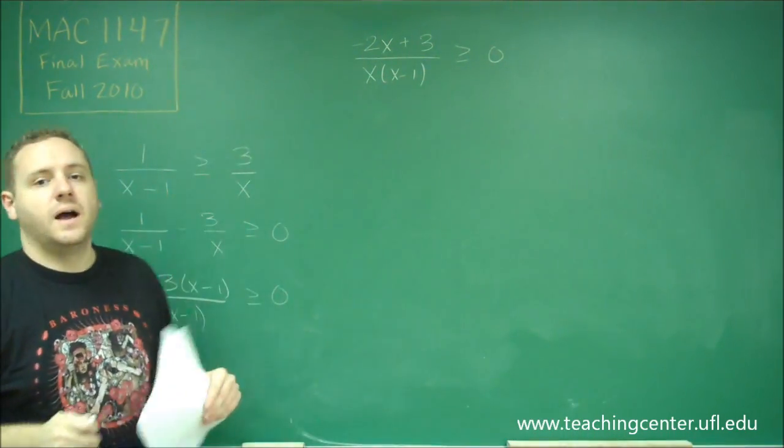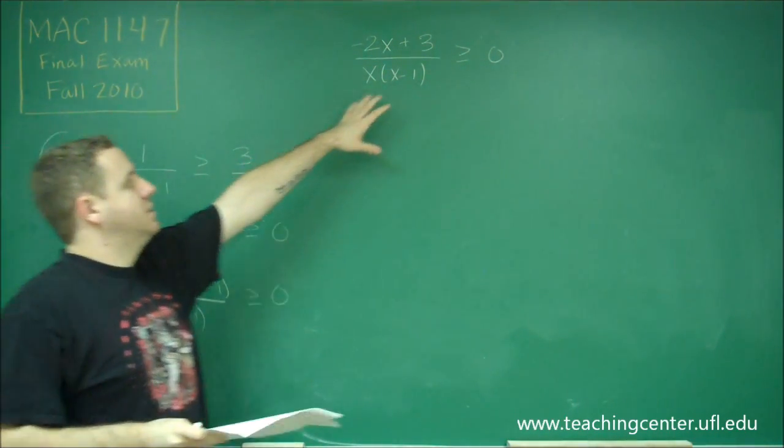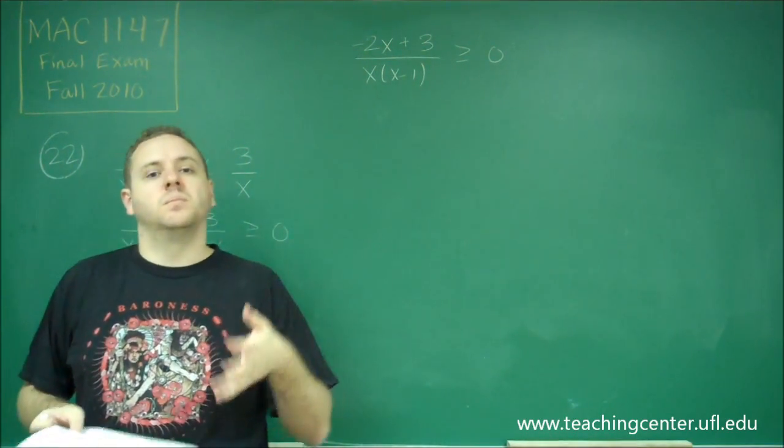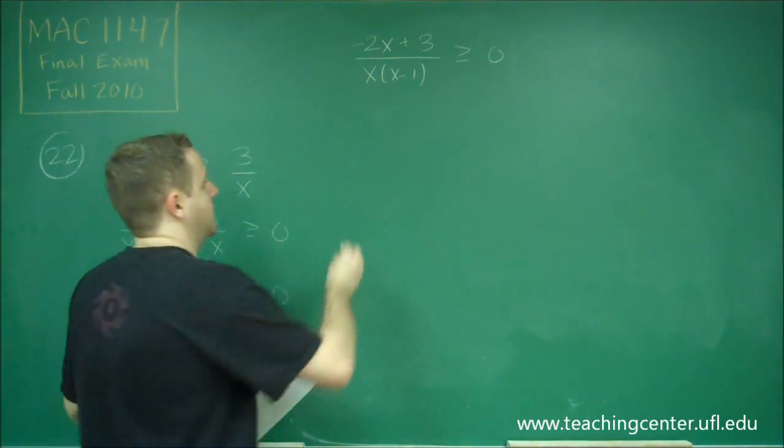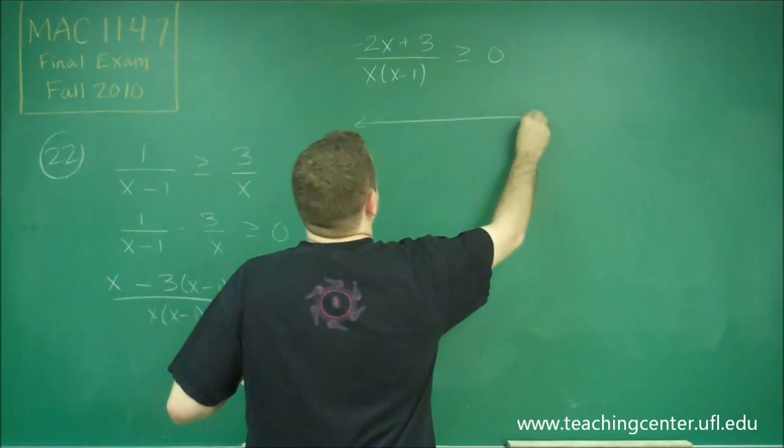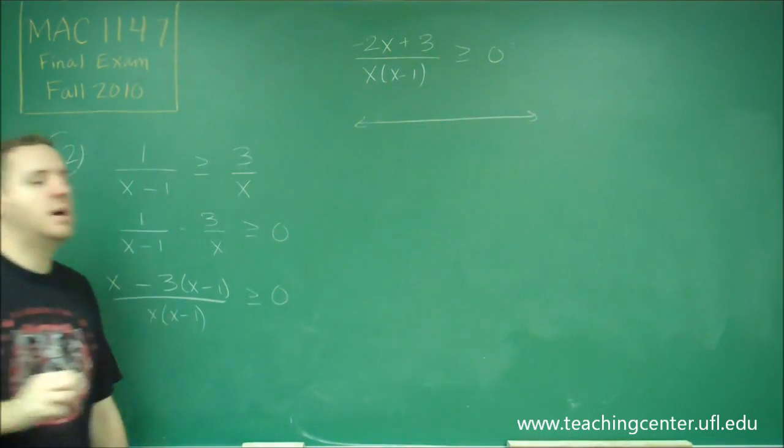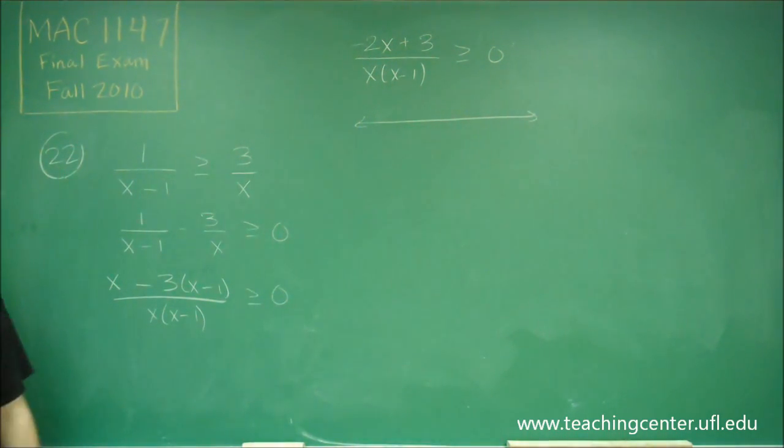Once you have one large fraction and an inequality, this just becomes go to the number line and set up all of your things. We need to put everything on the number line that would make this either 0 or undefined.